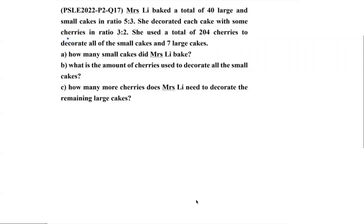The question says Mrs. Li baked a total of 40 large and small cakes in ratio 5:3. We already know that the total is 3+5=8 units, so 8 units equals 40.